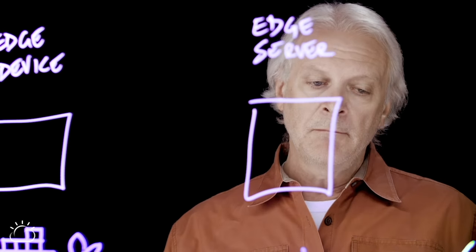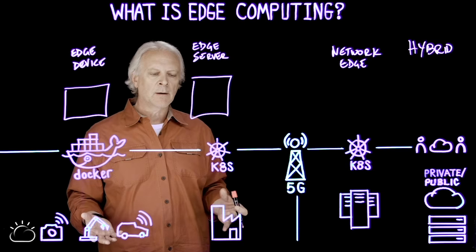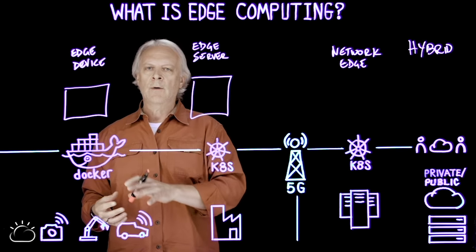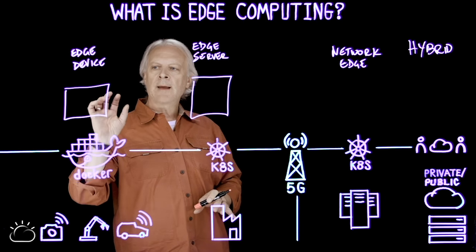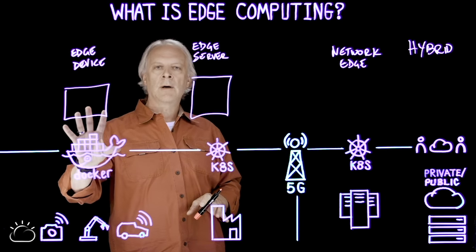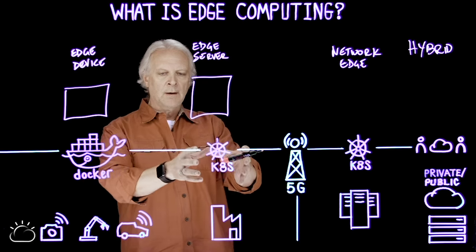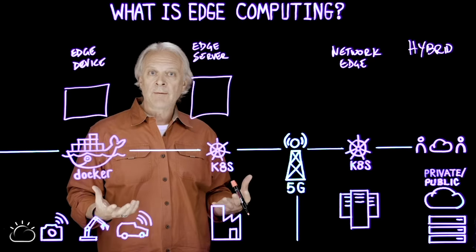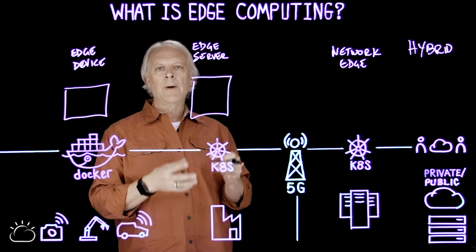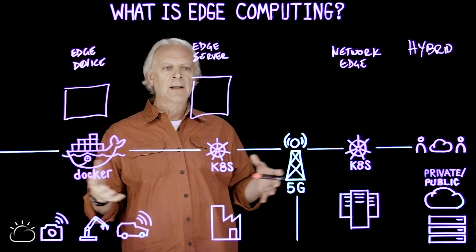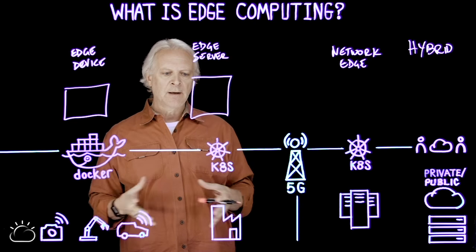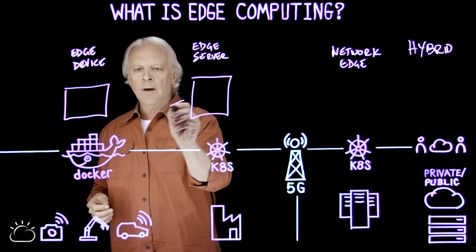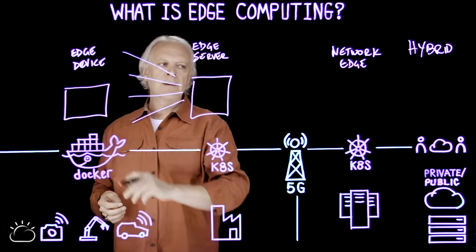Edge servers, being pieces of IT equipment, are often much larger. For containerized workloads on edge devices, we may run containers on a Docker runtime without Kubernetes. But in an edge server, not only do we have the capacity to run Kubernetes, we have the need — the need for elastic scale, high availability, and continuous availability for the workloads deployed there, because those servers are being used on behalf of many edge devices.